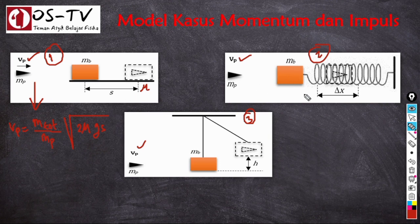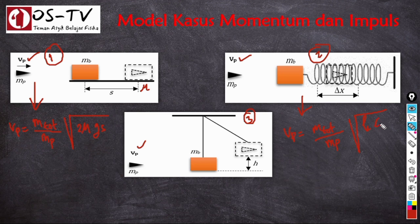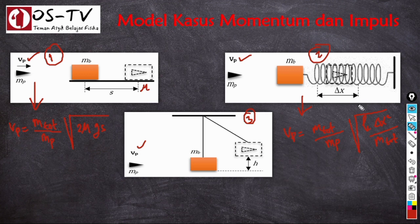Rumus cepat untuk kasus 2 adalah: VP = (m_total / m_peluru) × √(k × ΔX² / m_total). Di sini k adalah konstanta pegas, ΔX adalah sejauh mana pegas tertekan, dan m_total adalah jumlah massa peluru dan balok.